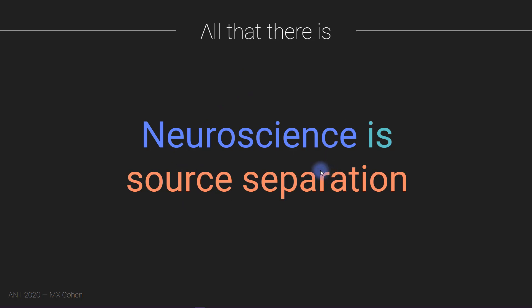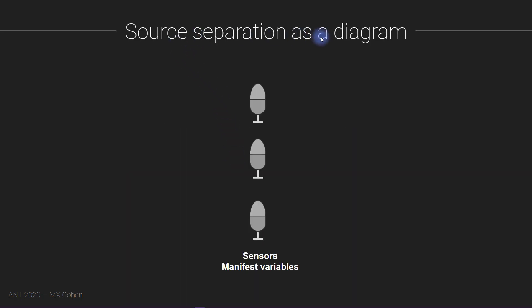Now in this video, I'm going to be talking about spatial statistical methods of source separation. Here's the diagram again of sources, sensors, and resulting components — I talked about this quite a bit in the previous video, so I'll go through it briefly as a reminder.